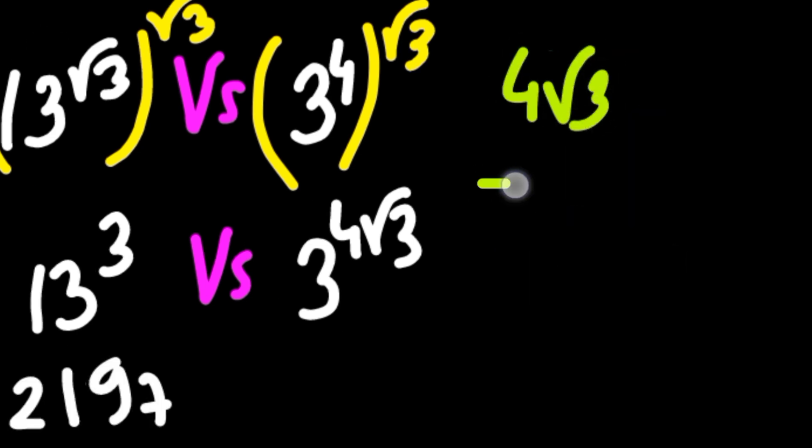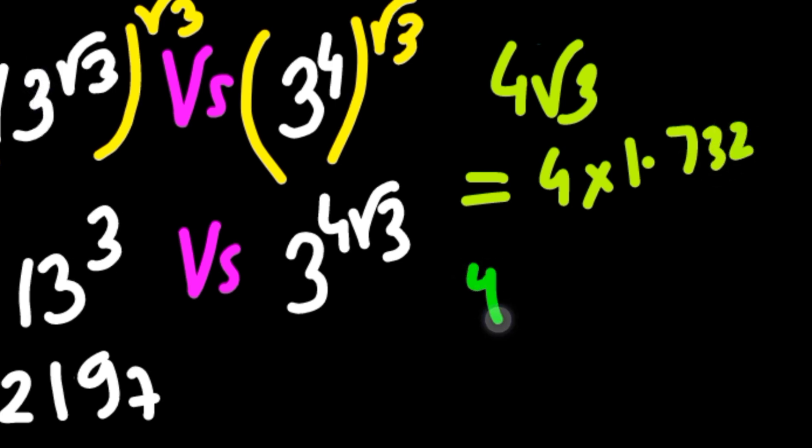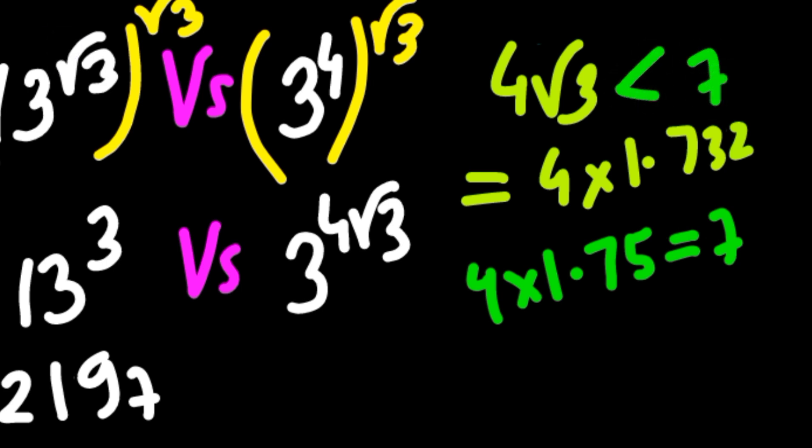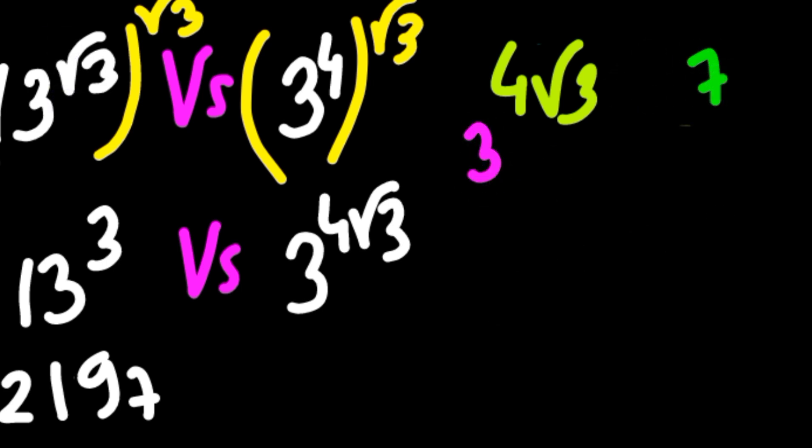On the other hand, 4 times root over 3 is equal to 4 times 1.732. 4 times 1.75 gives 7, so 4 times root over 3 is less than 7, or we can say 3 to the power 4 times root over 3 is less than 3 to the power 7.